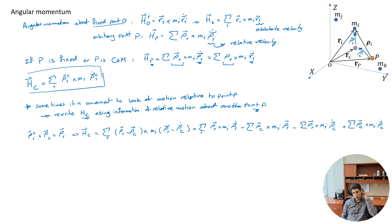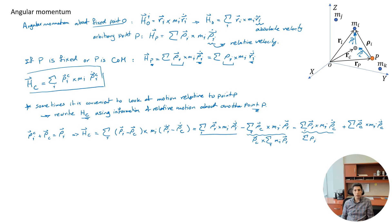Now let's look at these four terms one by one. The first term we keep as is. For the second term, since ρ_c is independent of i, we can factor it out: ρ_c cross the summation of m_i ρ_i. For the third term, similarly, the summation of m_i ρ_i, the whole thing, cross ρ_c. And for the fourth term, both ρ_c factors are constant.